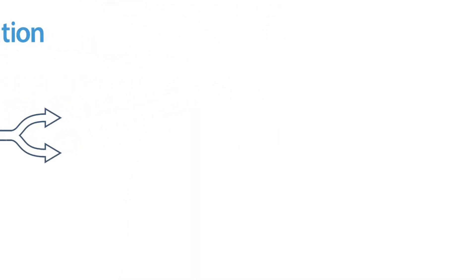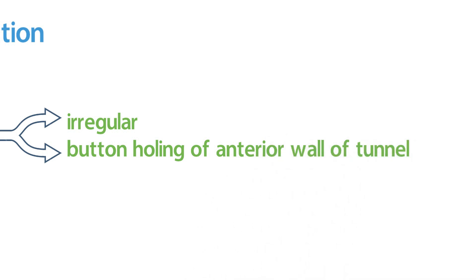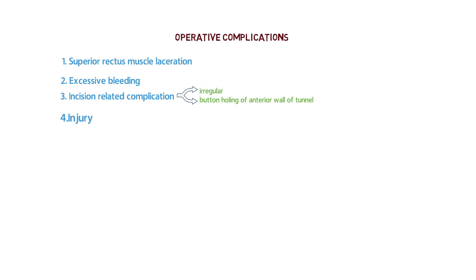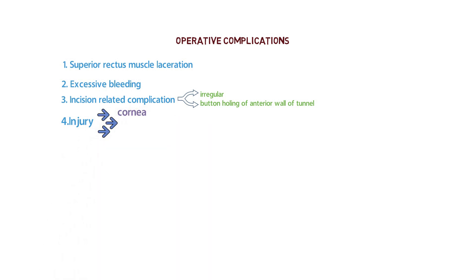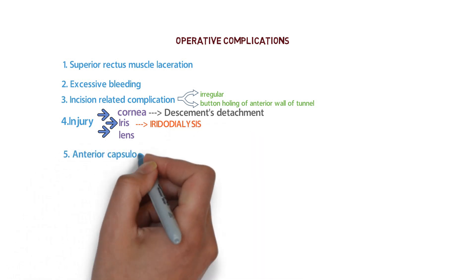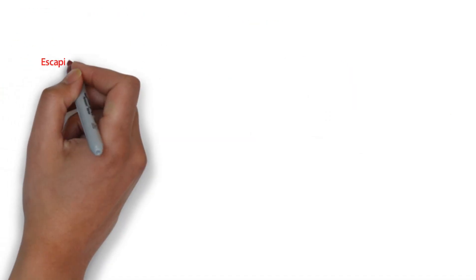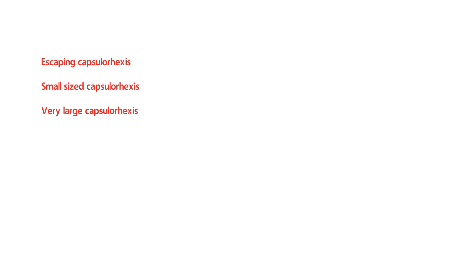The third complication is incision-related: the incision can be irregular, or there may be button-holing of the anterior wall of the tunnel. There can also be injury due to sharp-tipped instruments such as a keratome, a piece of ring, or a razor blade — injuring the cornea, iris, or lens. In the cornea there may be Descemet's detachment; in the iris it can cause iridodialysis. Complications related to anterior capsulorrhexis include escaping capsulorrhexis, small capsulorrhexis, or a very large capsulorrhexis.